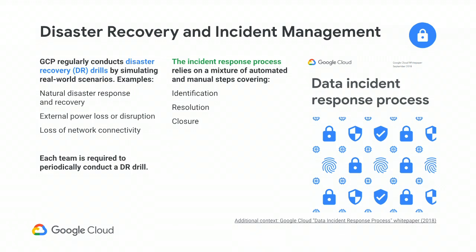Google regularly conducts disaster recovery drills by simulating real-world scenarios. These could be a fake earthquake that potentially knocks out power to a data center, or even dropping the power to the internet. There was a day in the office where I showed up to work, the video conferencing cut mid-meeting, and somebody sent a text message saying the internet is down for the next three hours — tell us what you did so we can write it down for the actual plan going forward. These tests are designed to give teams the ability to respond to real-world scenarios and help them improve their plan of action for when real incidents occur.